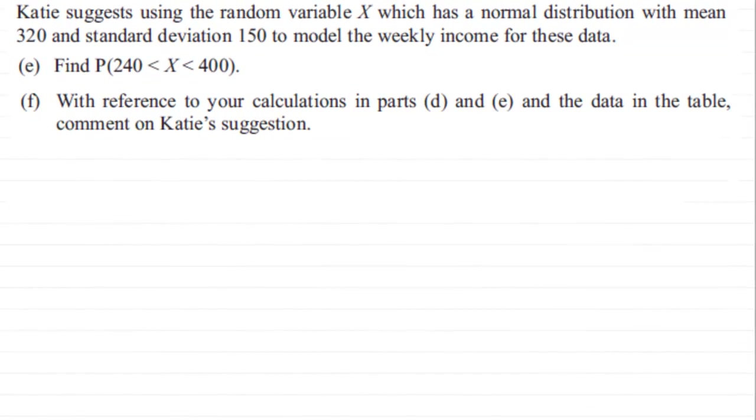In this part, we're told that Katie suggests using the random variable X which has a normal distribution with a mean of 320 and a standard deviation of 150 to model the weekly income for these data.